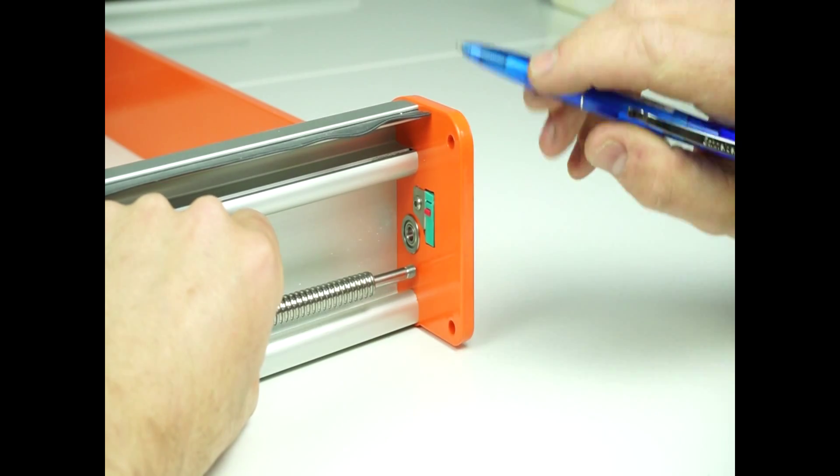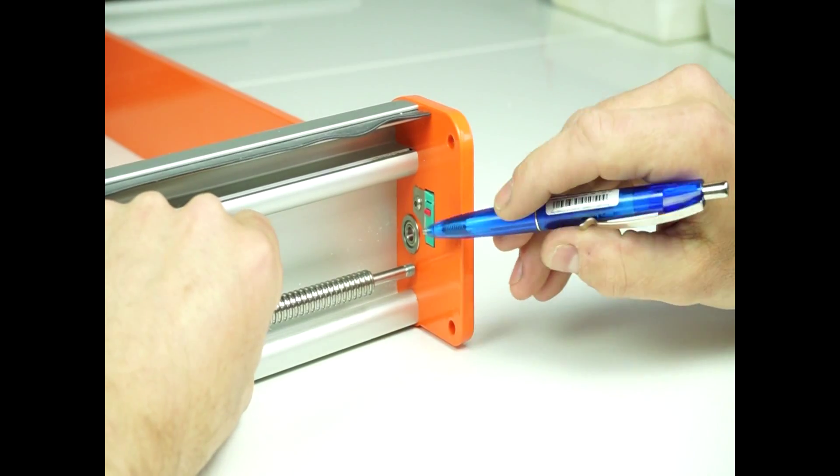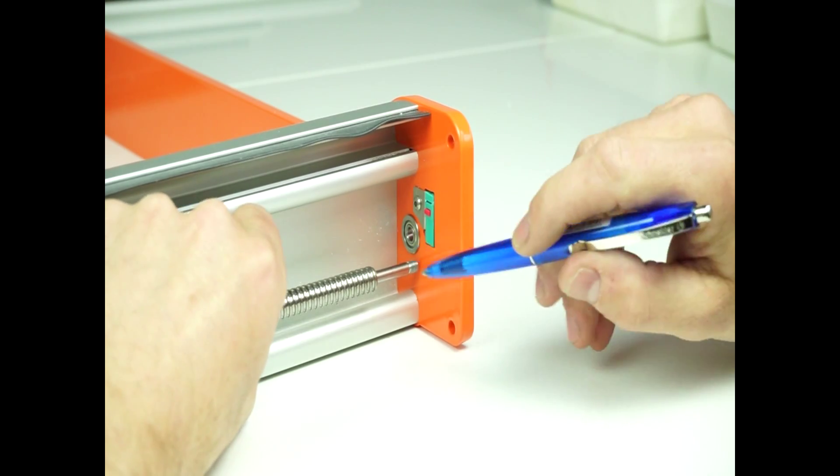The aim here is to adjust the play of the lead screw and the lead screw nut so that it is centered in the bearing.